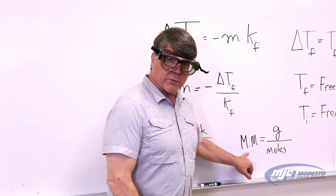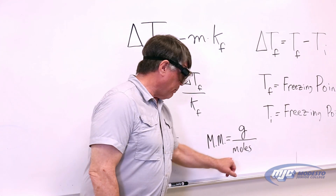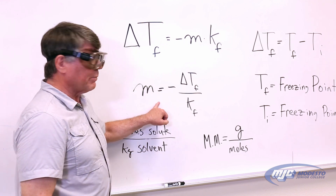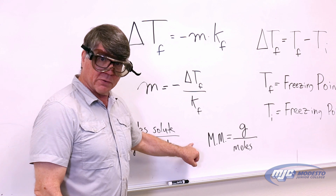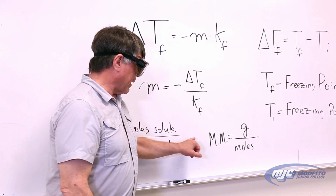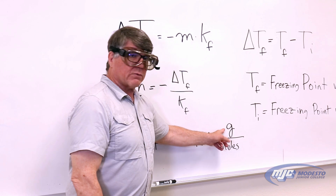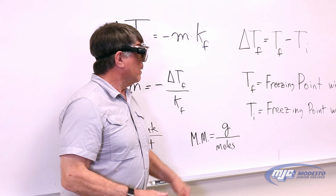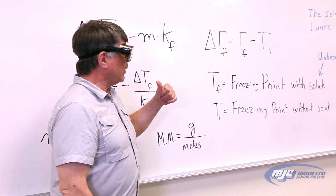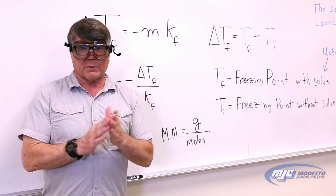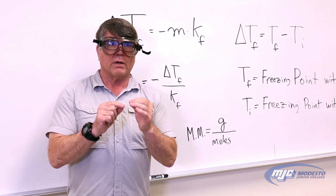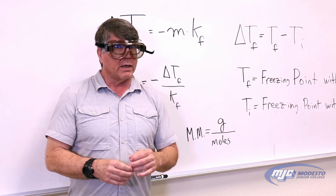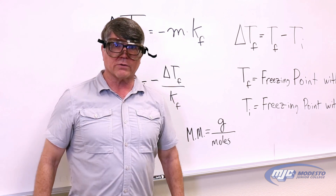The molar mass — remember — is grams over moles. This is how we get the moles: we take the molality that we get from this equation, multiply it by the kilograms of the solvent, the lauric acid, and that gives us our moles, which goes in the denominator. The grams — that's easy, we're going to weigh the solute. Once we know that, we have everything we need. Remember: the solute is the unknown, the solvent is the lauric acid. So let's go over and get started doing the experiment.